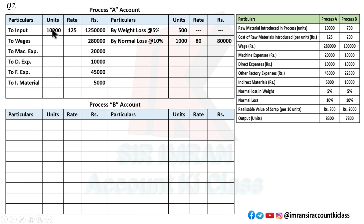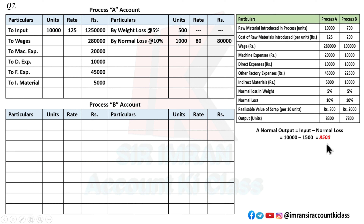The rate for normal loss is ₹800 per 10 units, which converts to ₹80 per unit. So 1,000 × 80 = ₹80,000. Now find normal output: input (10,000) minus both losses (500 + 1,000 = 1,500) = 8,500. Compare with actual output of 8,300. Since normal output (8,500) is greater than actual output (8,300), we have abnormal loss of 200 units.